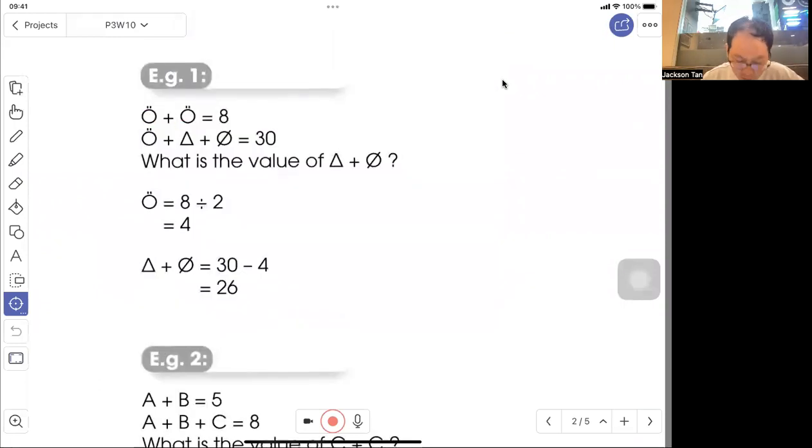So we have this. Let's see the same thing added to give you eight. And here, one of the same thing, triangle and this equals thirty. What's the value of triangle plus this? So they want us to find this thing, it's right here.